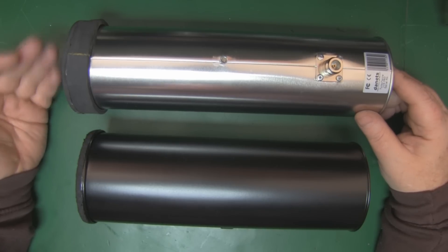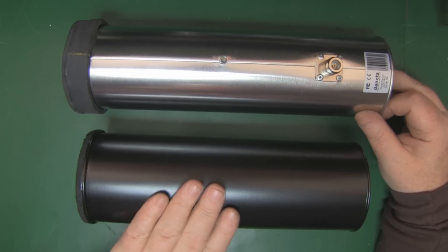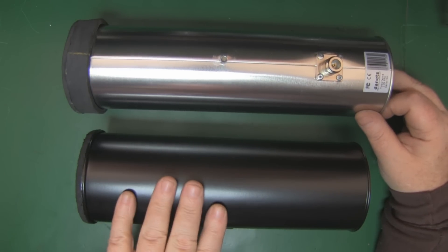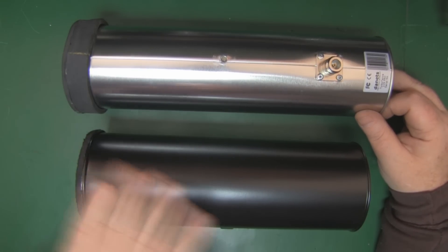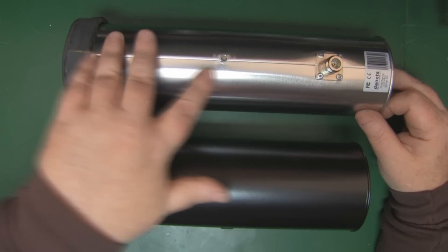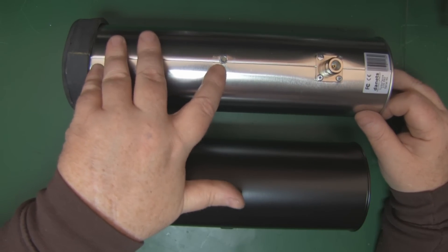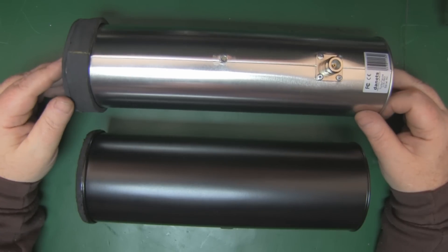If you find one for say 20 pounds, 25 pounds, then yeah, get one, but expect to modify it. I do know in some countries it's pretty hard to get hold of one of these toilet brush holders that I make mine out of. So if you can't get hold of one of these, then yeah, buy one of these and just modify it. Just keep in mind that the tripod mount here will fail eventually. It won't last forever.